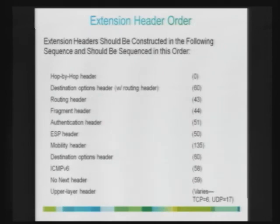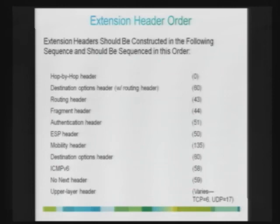The destination options header is processed by the final receiving node for whatever options are defined. ICMPv6 is also represented as an extension header. And finally, you have upper layer extension headers, which would be TCP, UDP, or any other transport layer applications.